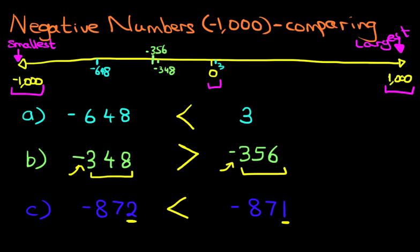So that is how we compare numbers, negative numbers, up to minus 1000. If you're doing a question like this, it may be worthwhile just drawing that number line from minus 1000 through zero to plus 1000, write down smallest on the left, largest on the right, and then work through the question.